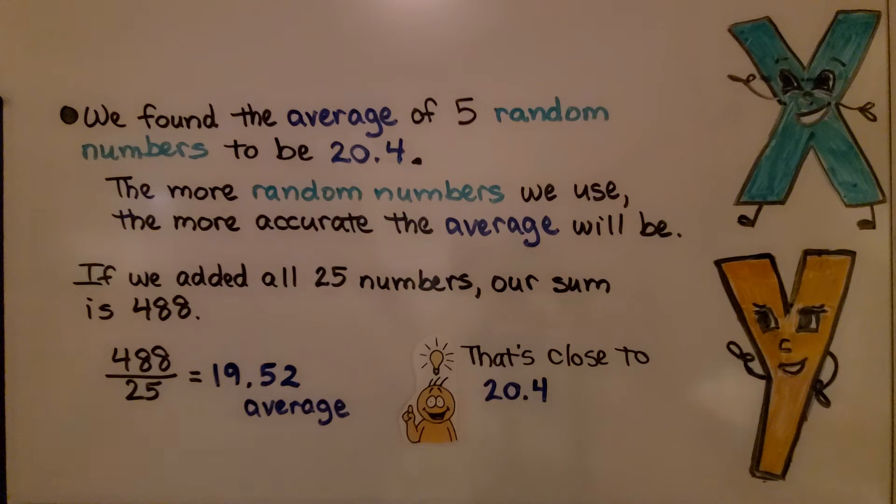If we added all 25 numbers on the table, our sum is 488. And if we divide 488 by those 25 numbers, we get 19.52 average. And that's close to 20.4. That's not too far away, is it? The more random numbers we use, the more accurate the average will be.